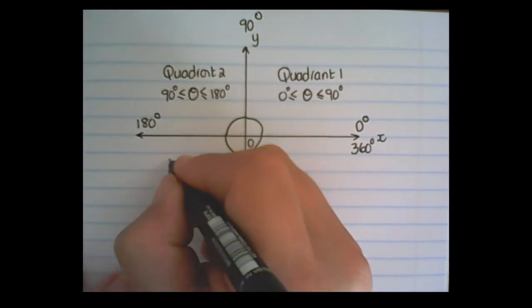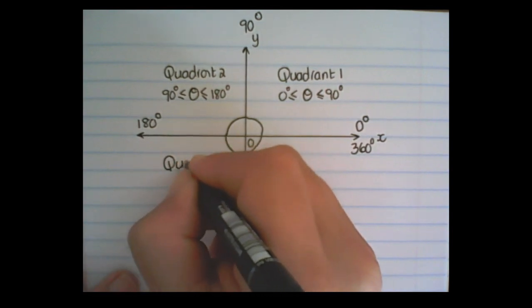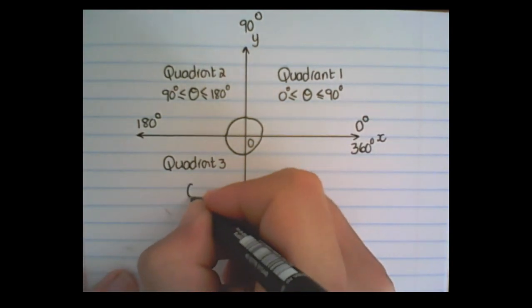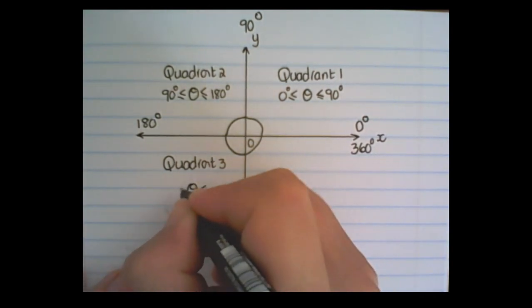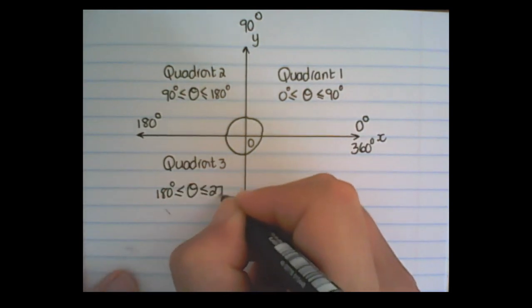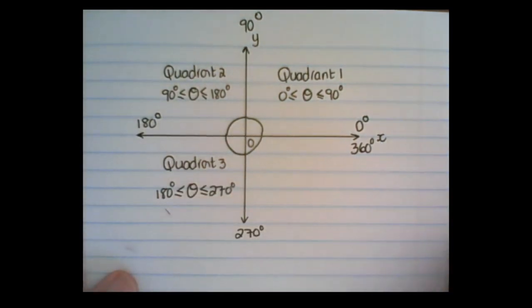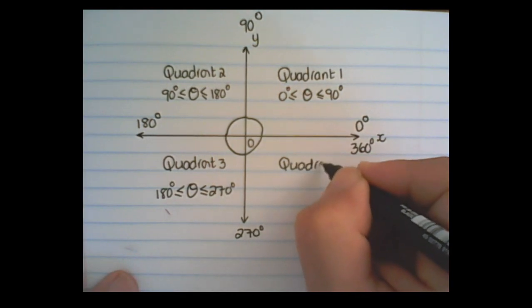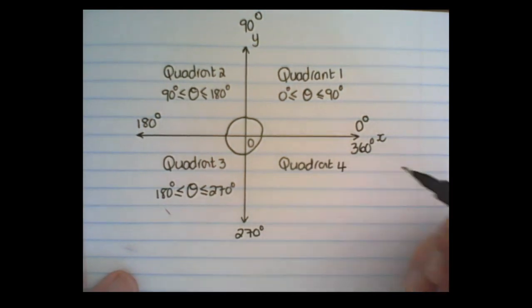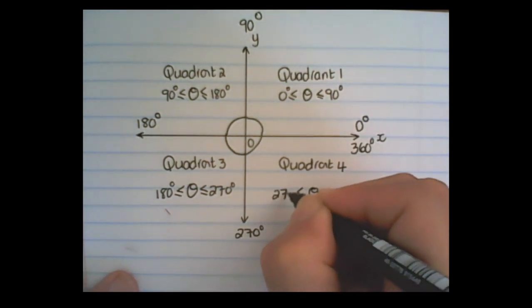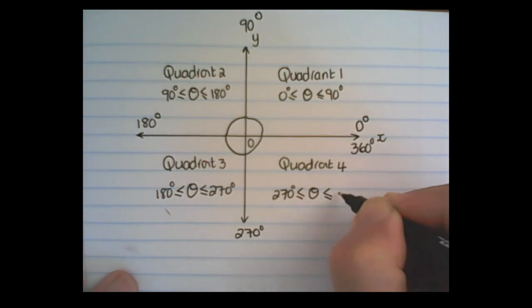Then this is called quadrant 3, and it represents the angle size between 180 and 270 degrees. And the last one is called quadrant 4, and it represents the values from 270 degrees up until 360 degrees.